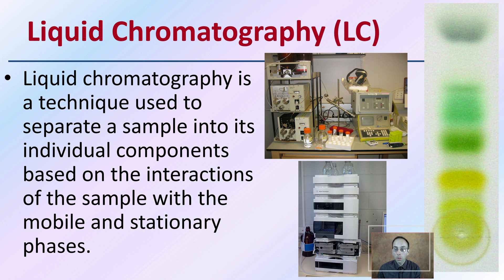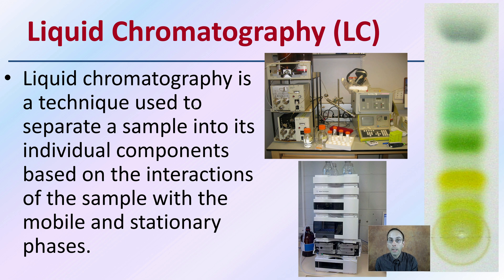Liquid chromatography operates around the same basic idea as gas chromatography, except it separates samples into individual components based on their interactions with a mobile and stationary phase. You may have encountered this on a basic scale — for example, separating the inks in pens, or separating chlorophyll from plant materials. These are examples of liquid chromatography.